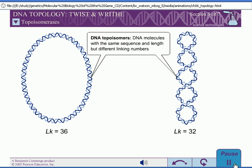DNA molecules with the same sequence and length but different linking numbers are called DNA topoisomers since they differ only in topology.